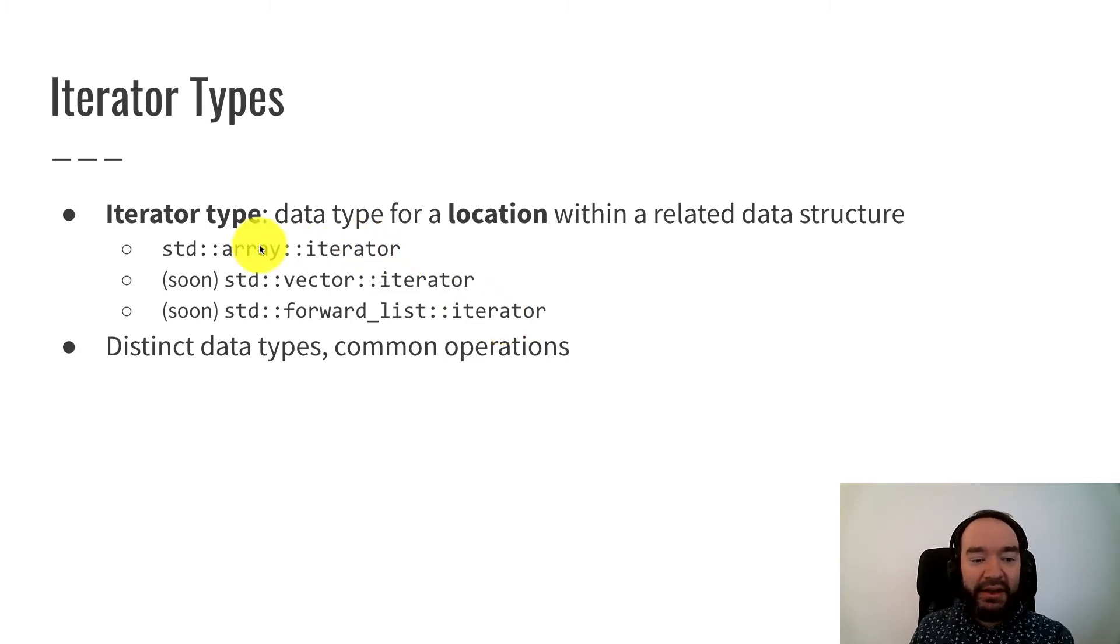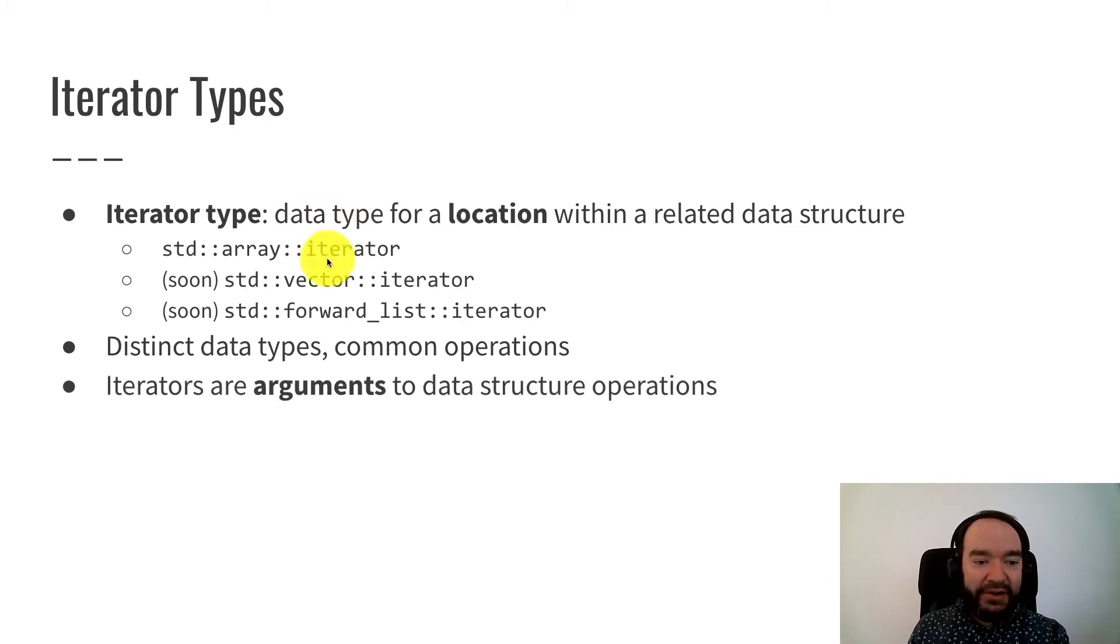So just to be clear, array iterator is a different data type from an array. Because an array is a whole collection of elements. An array iterator is a location inside that collection. And all of these are different data types from each other as well. Array iterator is a class. Vector iterator is a different class. Forward list iterator is a different class. So they're not interchangeable data types. But they do have a common set of operations because they're all implementing a common abstract data type.